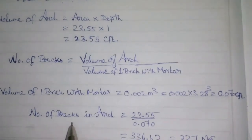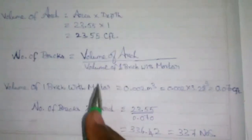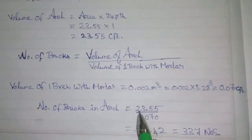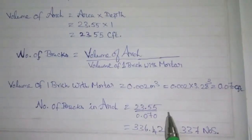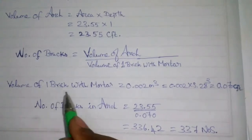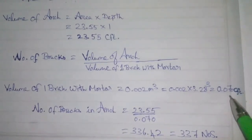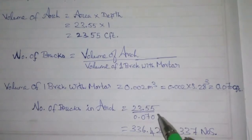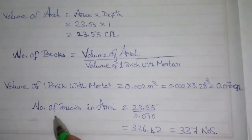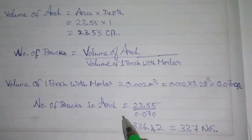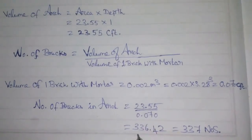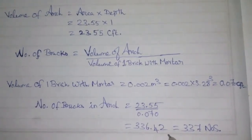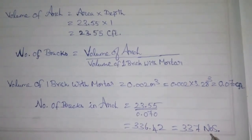Number of bricks equals volume of the arch divided by volume of one brick with mortar. The volume of the arch is 23.55 cubic feet, divided by 0.070 cubic feet per brick. This gives us the number of bricks in the arch.